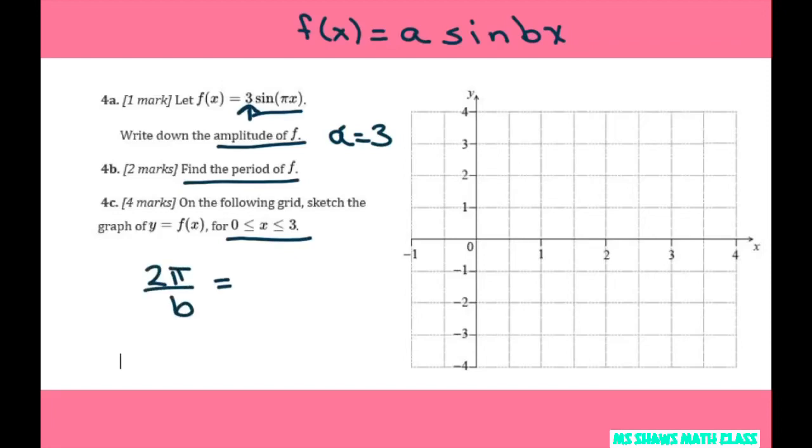So in our case that's going to be 2 pi and our b equals pi. But that's not your period. You have to take, so let's put period here. So 2 pi divided by pi equals 2.